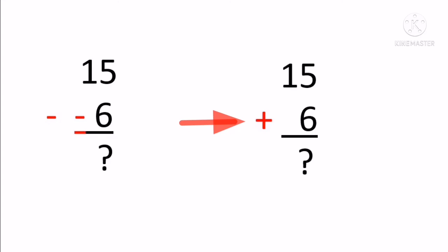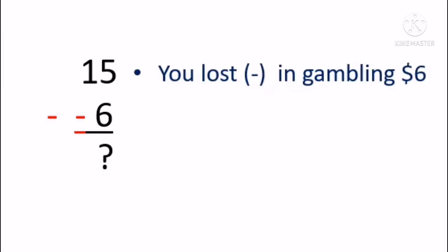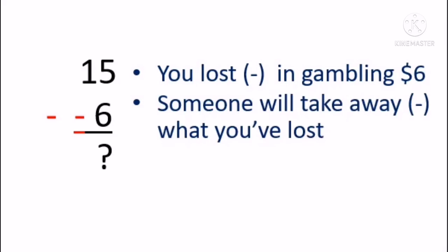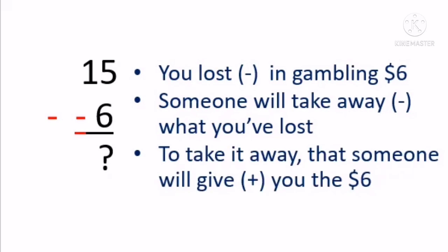And this is the logic behind it. Let's say, for example, that you went gambling and you lost $6. Now, someone wants to take away what you've lost. To take away your loss, that someone needs to give you an amount to cover your loss, which is, in our problem, the $6.